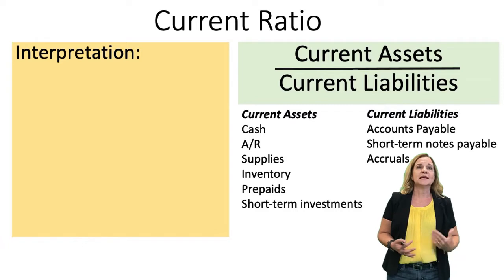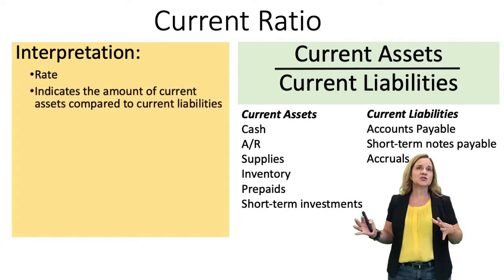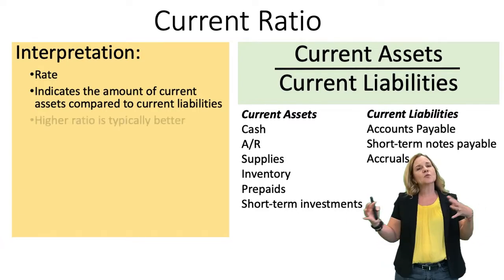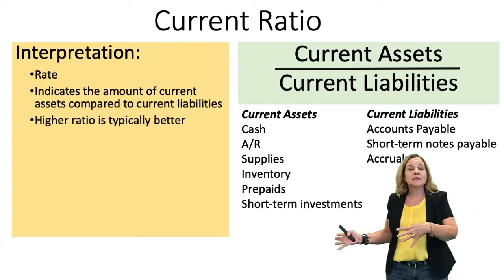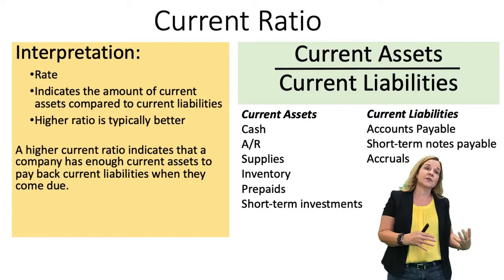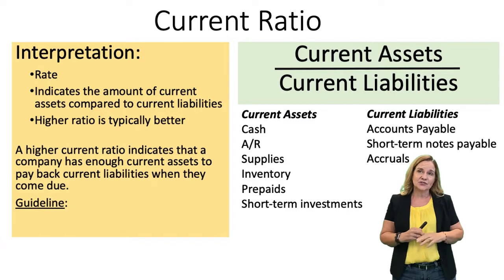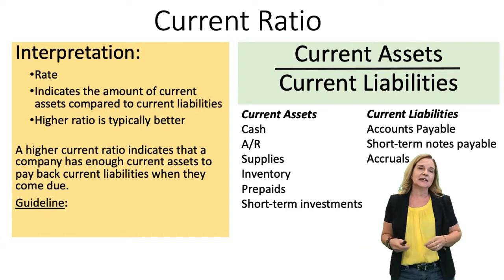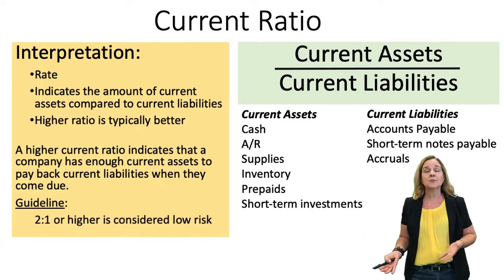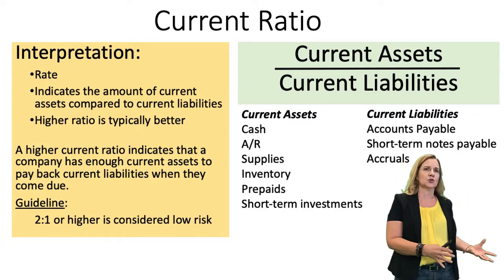The current ratio is a rate and it indicates how much current assets we have compared to current liabilities. A higher rate is better because it shows how likely it is that we can pay off our short-term debt. A guideline — and remember these are just standard guidelines — is a two-to-one or higher is considered better, because that would mean you have twice as much current assets to pay off your current liabilities.